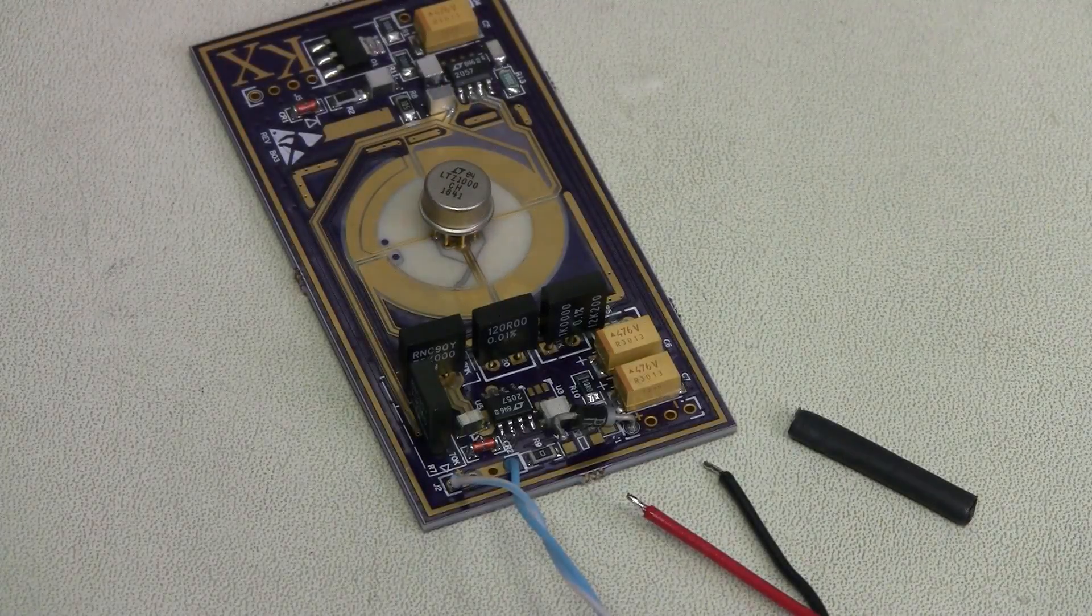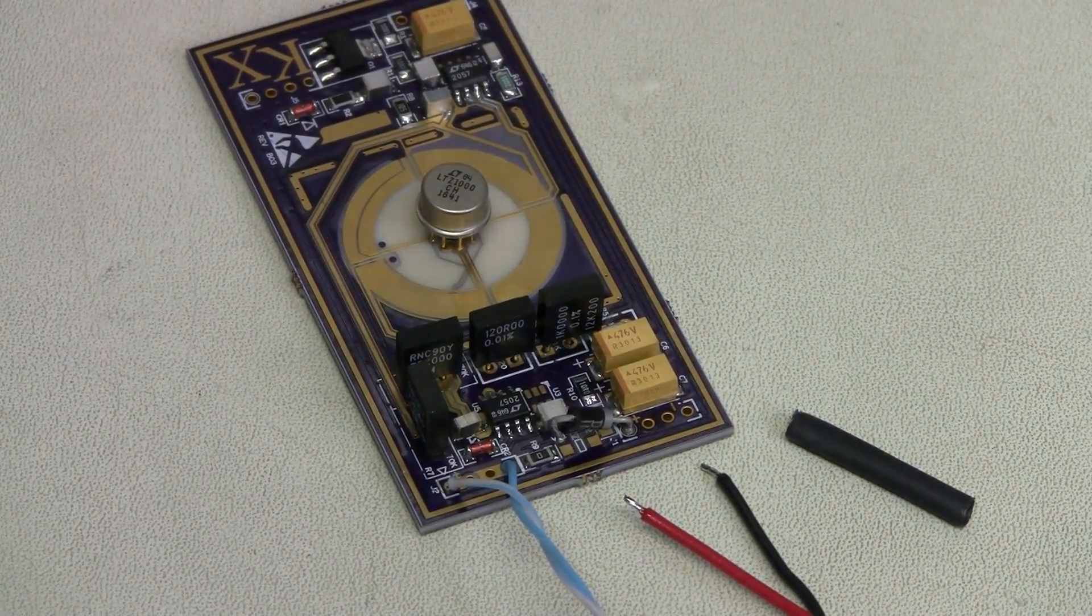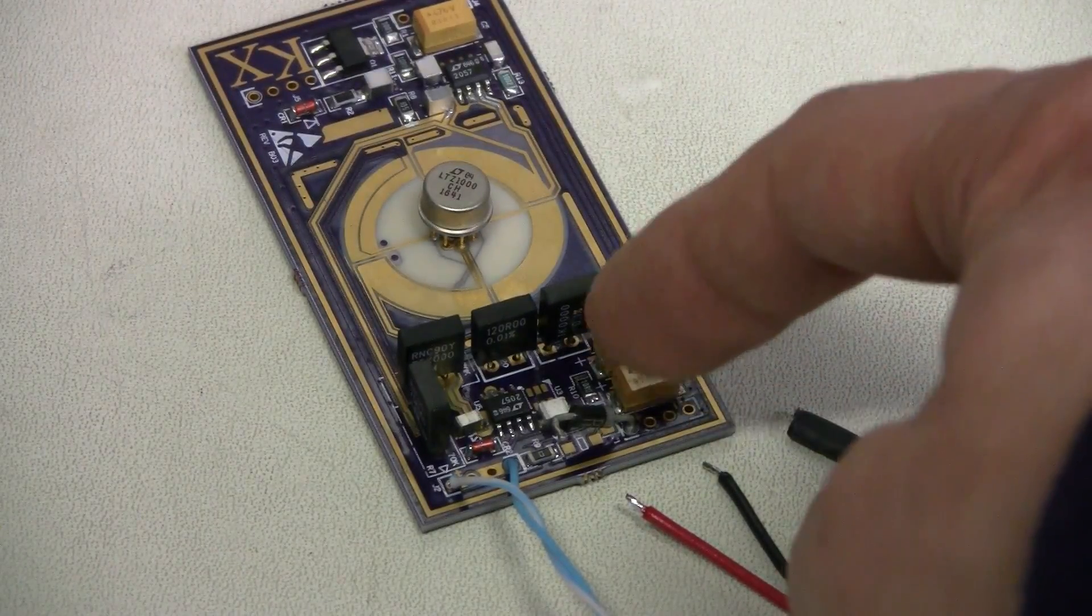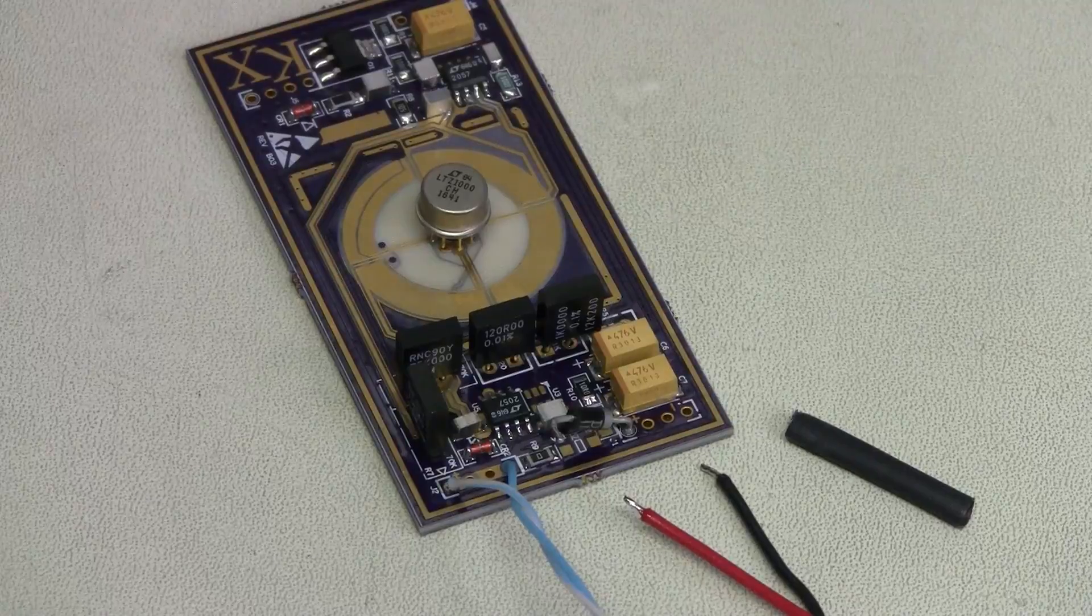Here I attached a twisted pair to the output, unshielded for now. I am going to connect power through this Schottky diode for reverse polarity protection, just in case.